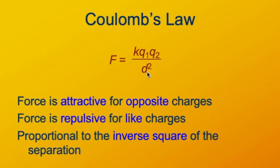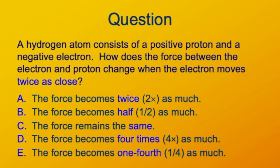That's what d squared in the denominator tells us. We've seen already that the electric force decreases with distance, and mathematically that decrease is with the square of the distance. Quick check: imagine the hydrogen atom — the electron zinging around the proton. If the electron and proton are separated by some distance there is an attractive force between them. If the electron moves twice as close to the proton, how does the force change?